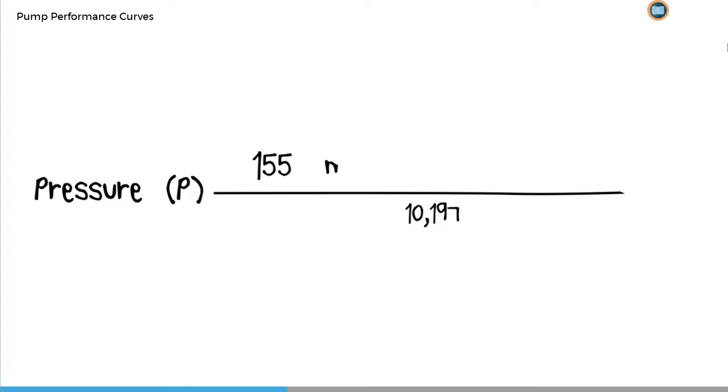For example, a head of 155 meters and a density of 890 kilograms per meter cubed would be equivalent to a pressure of 13.5 bars.